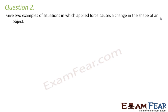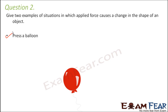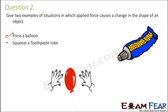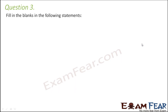Question number two: give two examples of situations in which applied force causes a change in the shape of an object. One example is pressing a balloon. If you take an inflated balloon and press it with both hands from both sides, the balloon gets squeezed and changes its shape from spherical to oval. Another example is squeezing a toothpaste tube — as you squeeze it, the toothpaste comes out and the tube keeps changing its shape due to the force applied.